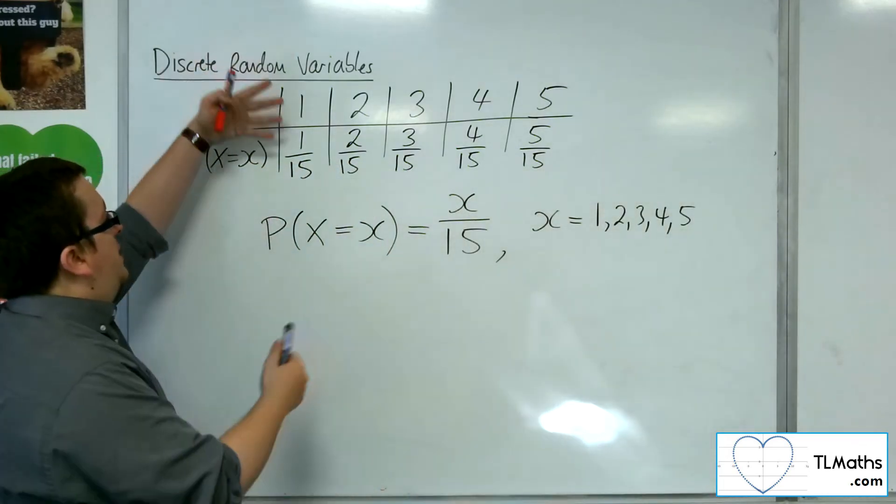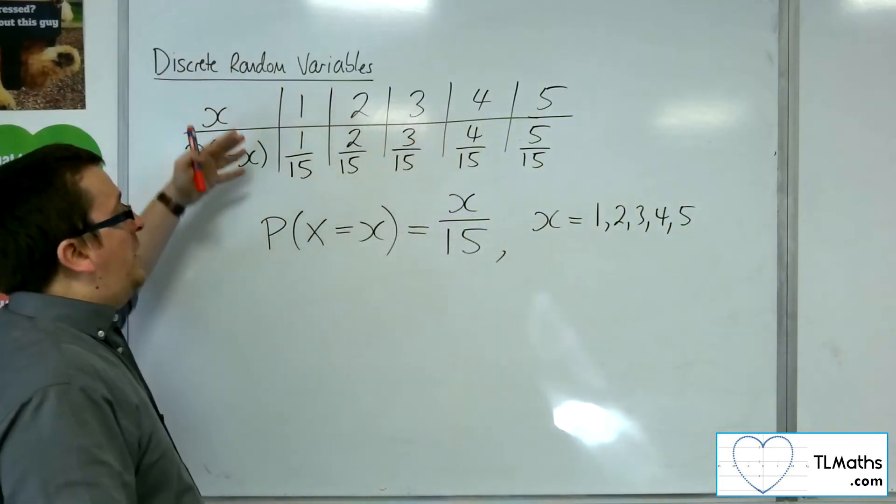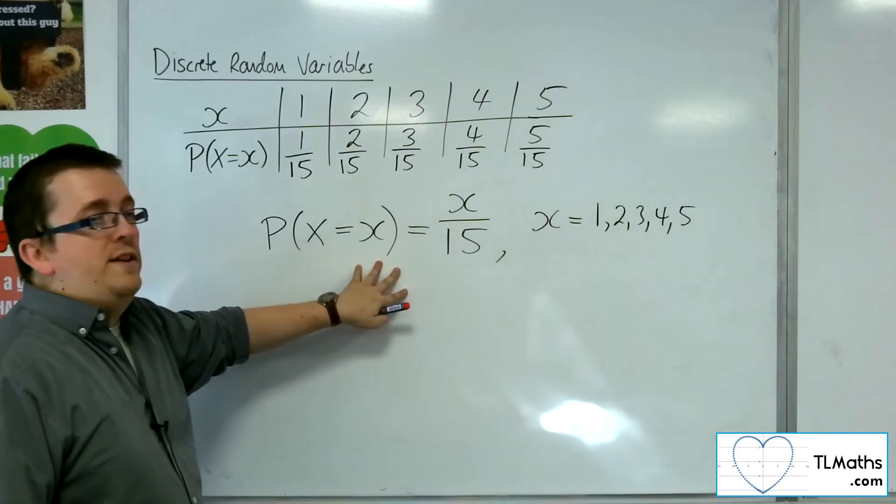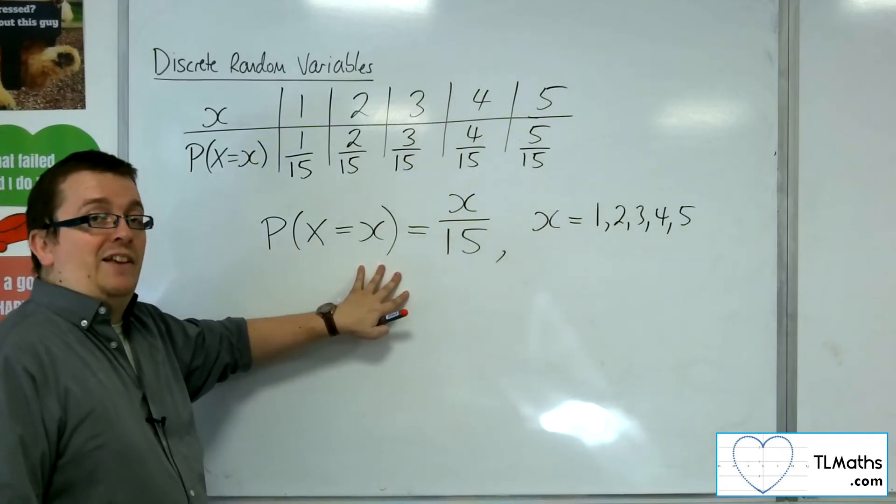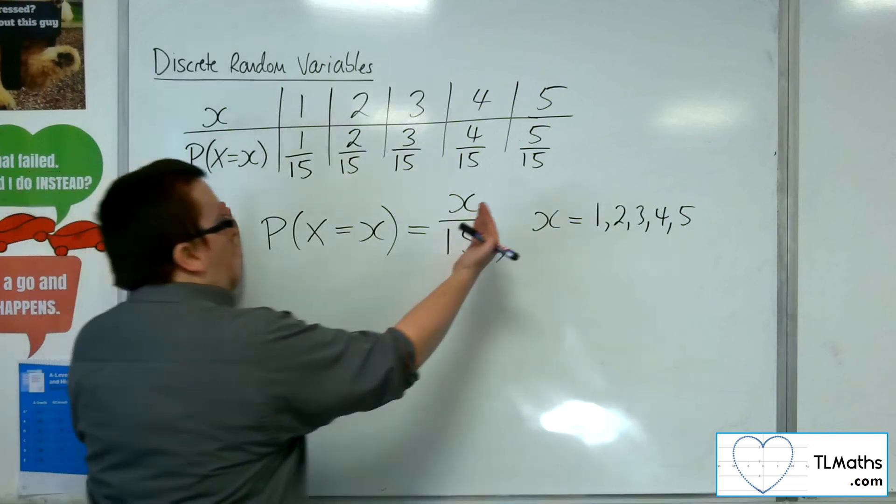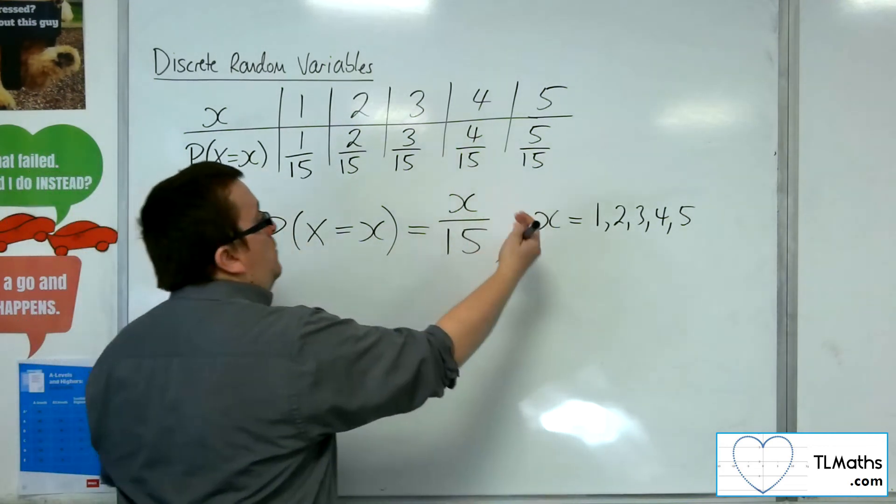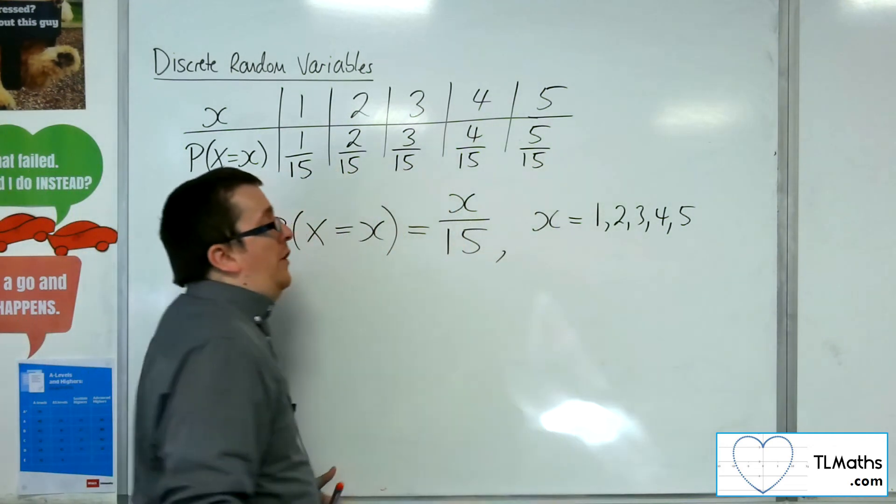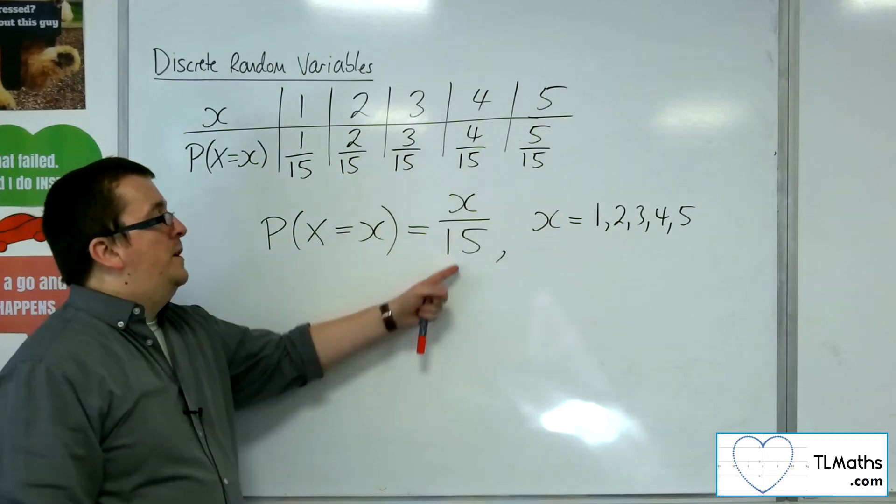So we can instead, instead of writing all the probabilities out, we can write the probability distribution as an algebraic function, where we have the function given to us, and then we're told which values of x is attributed to this.